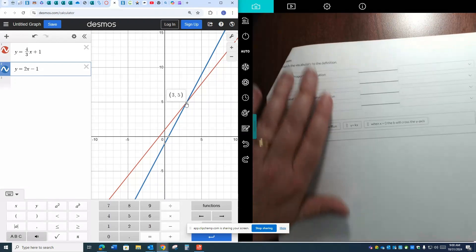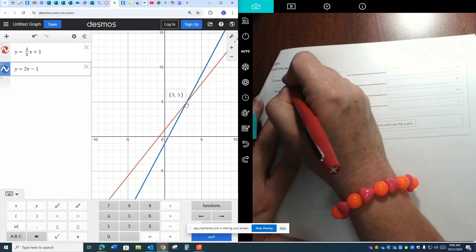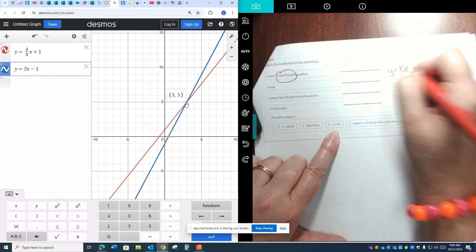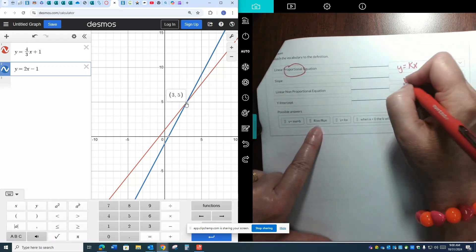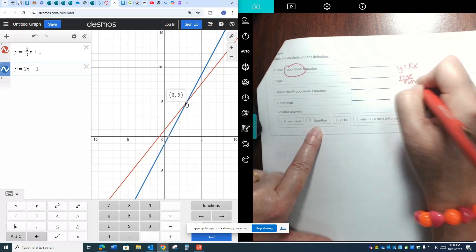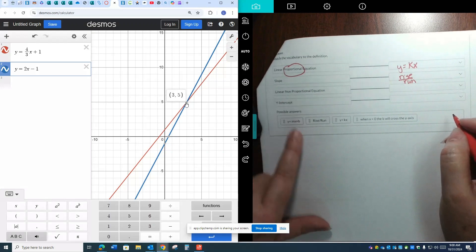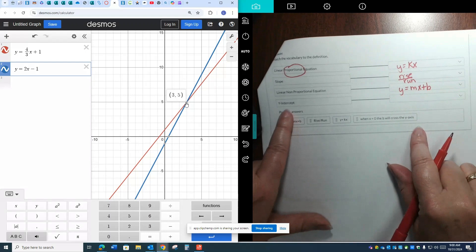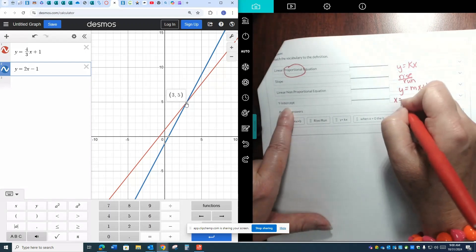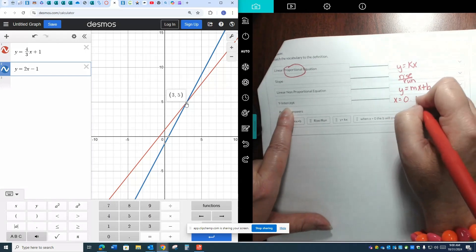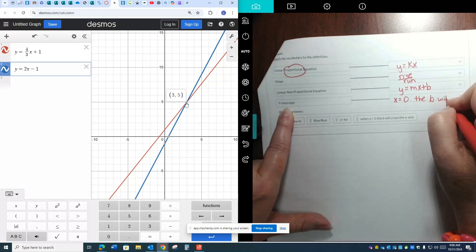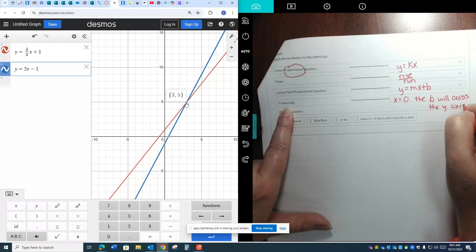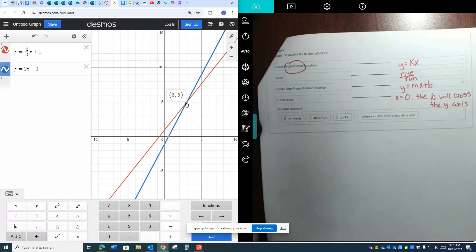Okay. And last one was some vocab. Linear proportional relationship. I actually gave you a supplemental aid that should have helped you with this. The proportional relationship is y equals kx. Slope, we find that by using rise over run. A non-proportional equation, that was also on your supplemental aid, plus it's the big idea of this unit, y equals mx plus b. And then the last one, the y-intercept, that's when x equals 0. Remember, I keep calling it zero's partner. X equals 0. The b will cross the y-axis. So it's that point where the line crosses the vertical axis. And that was it.